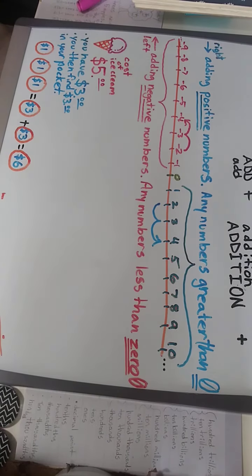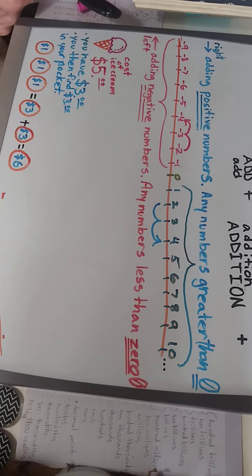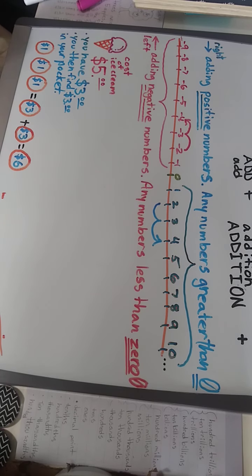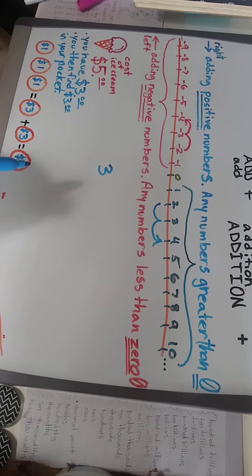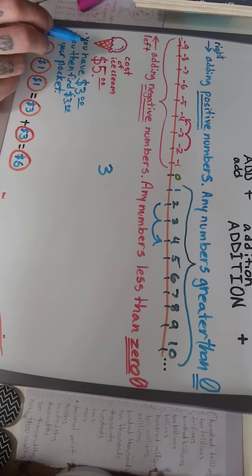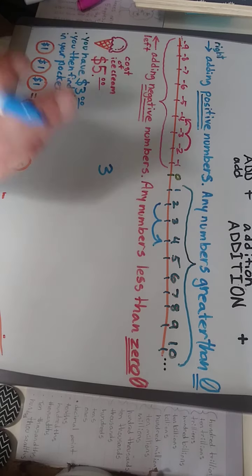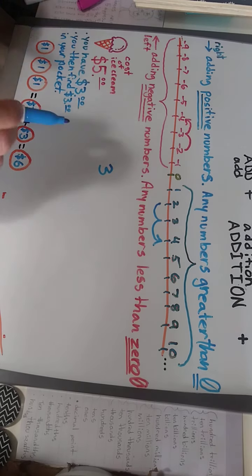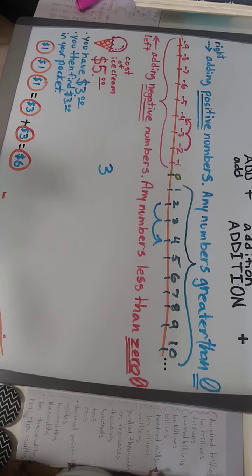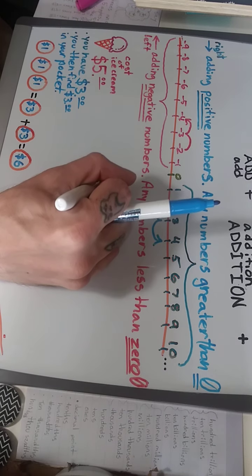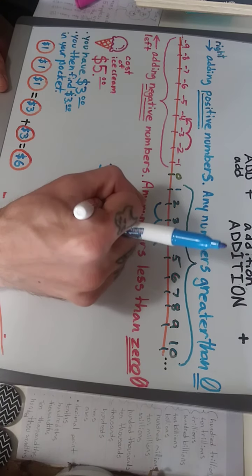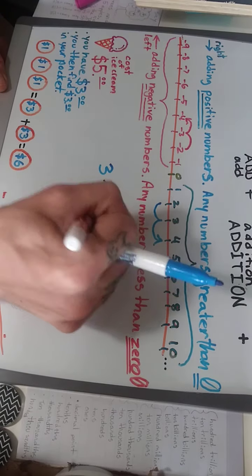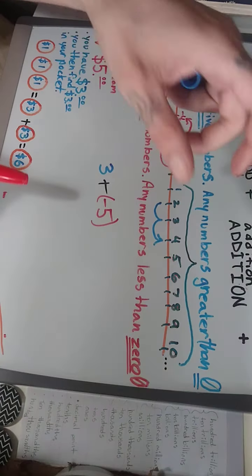Let's do an example. If you wanted to buy some ice cream and you have three dollars, that's a positive number. The ice cream costs five dollars, which we write as negative five dollars because we would be giving five dollars. So we would add our positive three dollars plus the cost of our ice cream, which would be five dollars, written as negative five dollars.